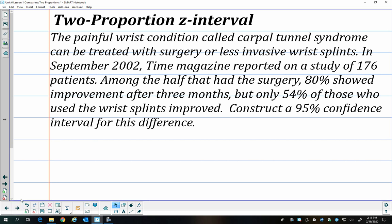So they can address this carpal tunnel syndrome with either surgery or with wrist splints. Some people might choose wrist splints because they don't want to deal with surgery. Some people might want to do surgery because they think it will work better. And so they have 176 patients, and half of them or 88 of them got the surgery and the other half got the wrist splints.